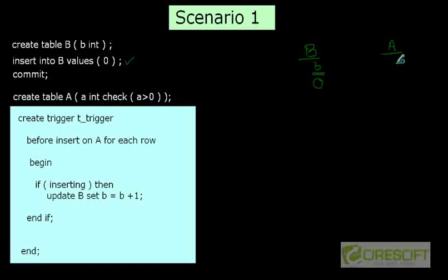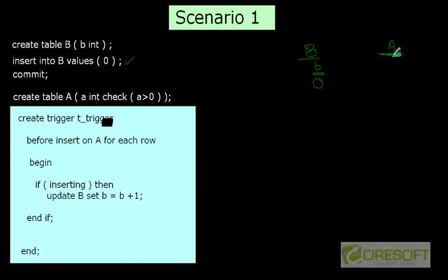That means you can insert one, two, three, four, but you cannot insert minus one, zero, and so on. That is what the constraint says. And then what we did is we are going to create a trigger, and that trigger is going to be on table A. If we insert a row into table A, then we are going to update table B's column B with plus one.